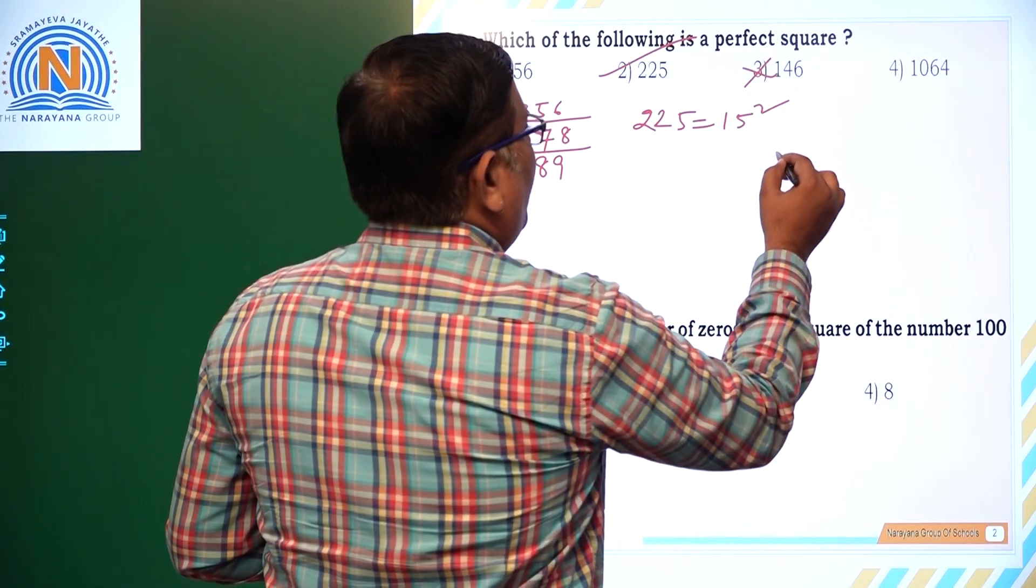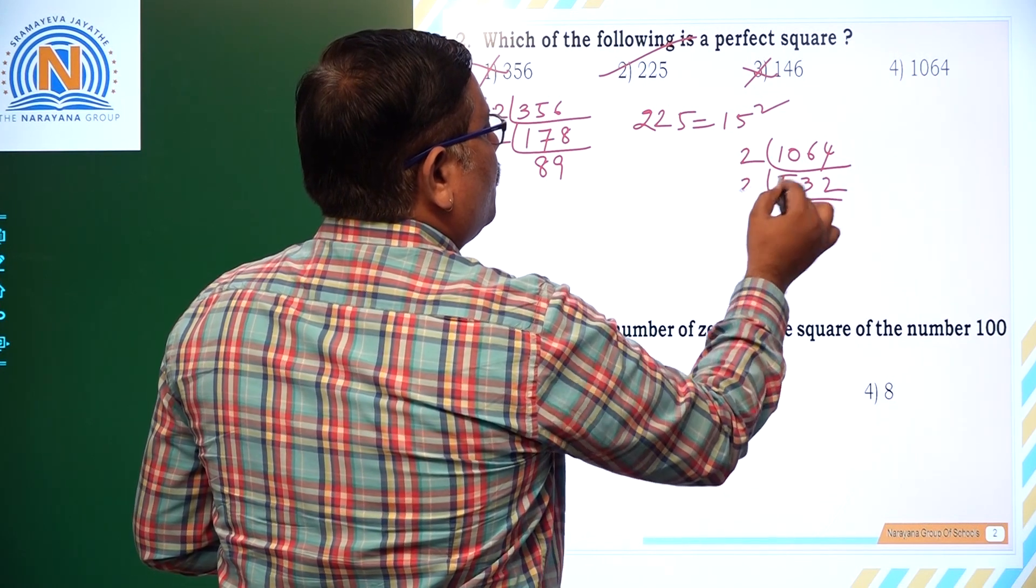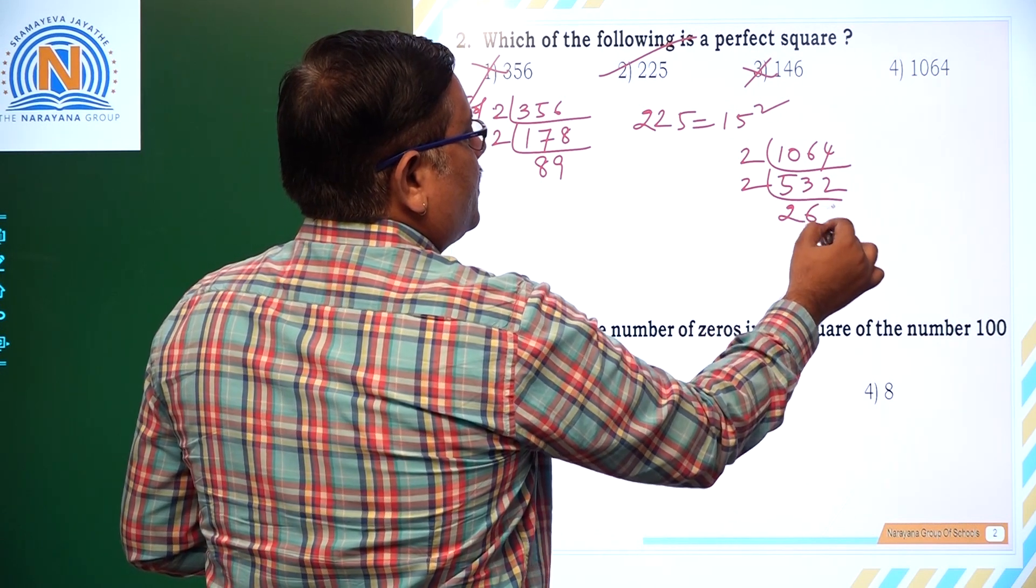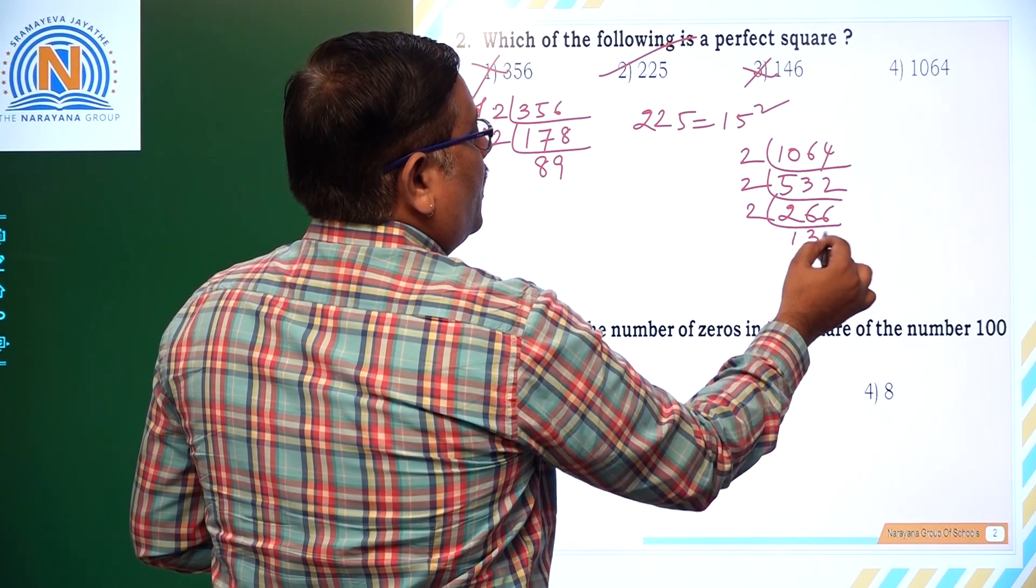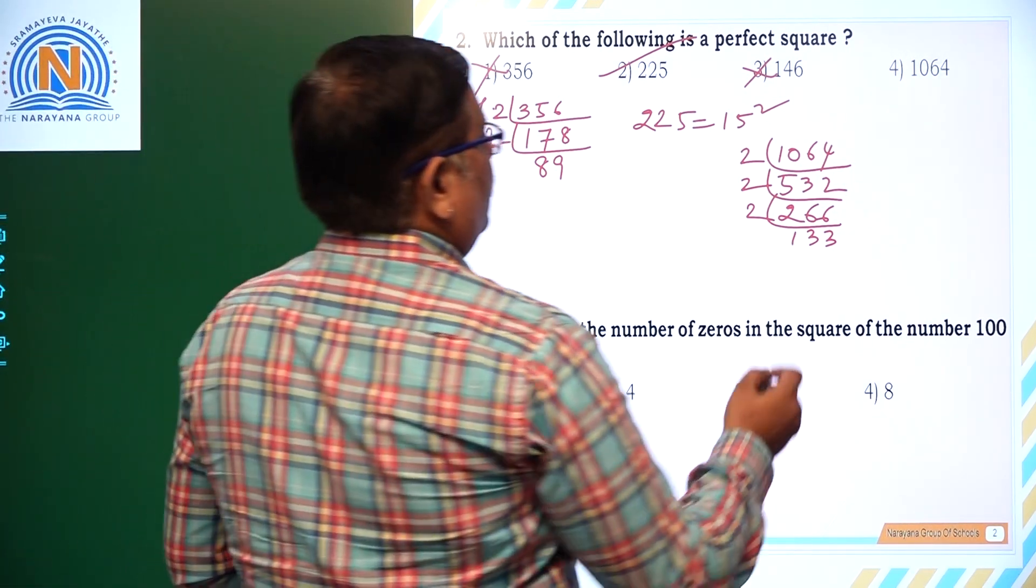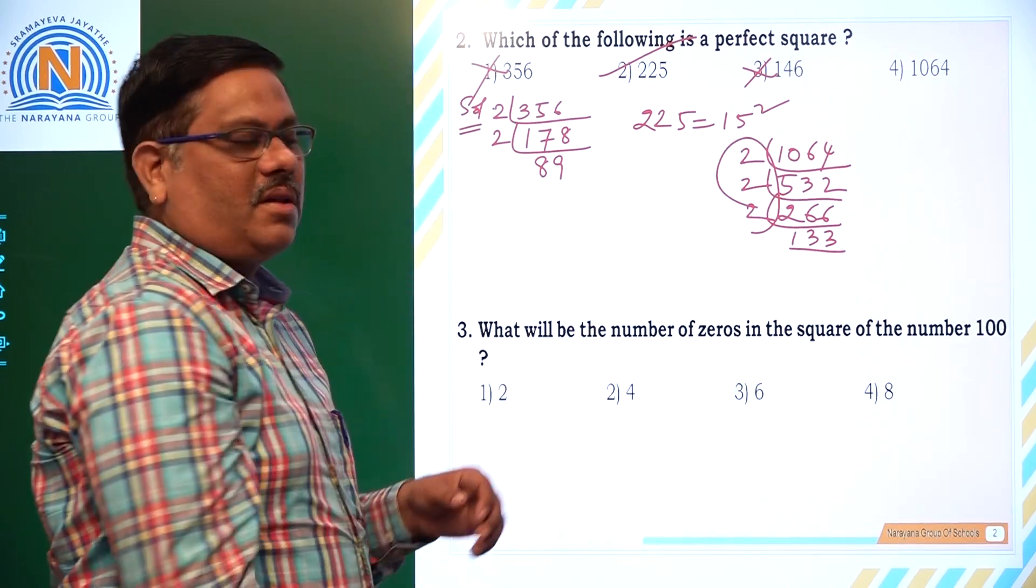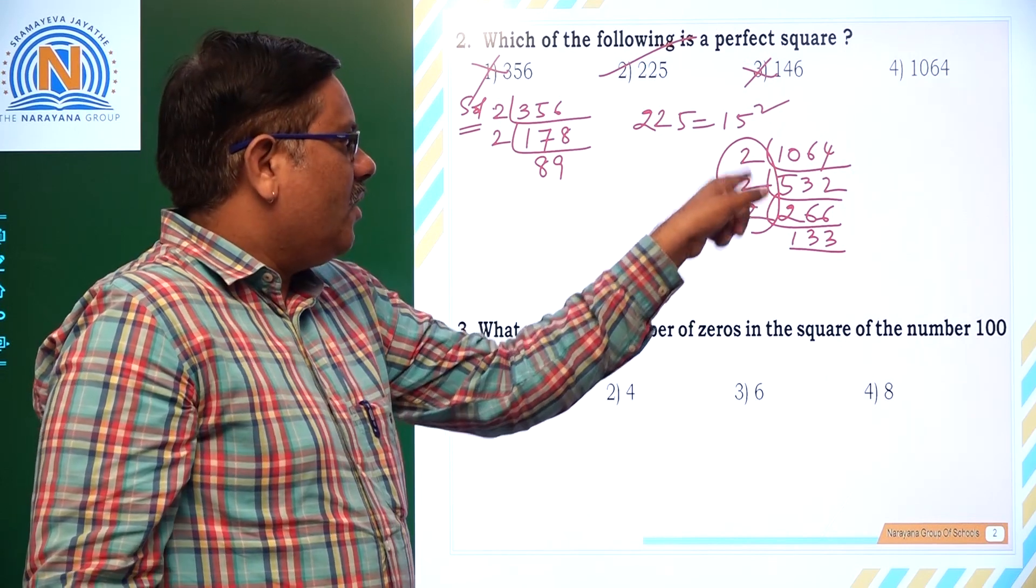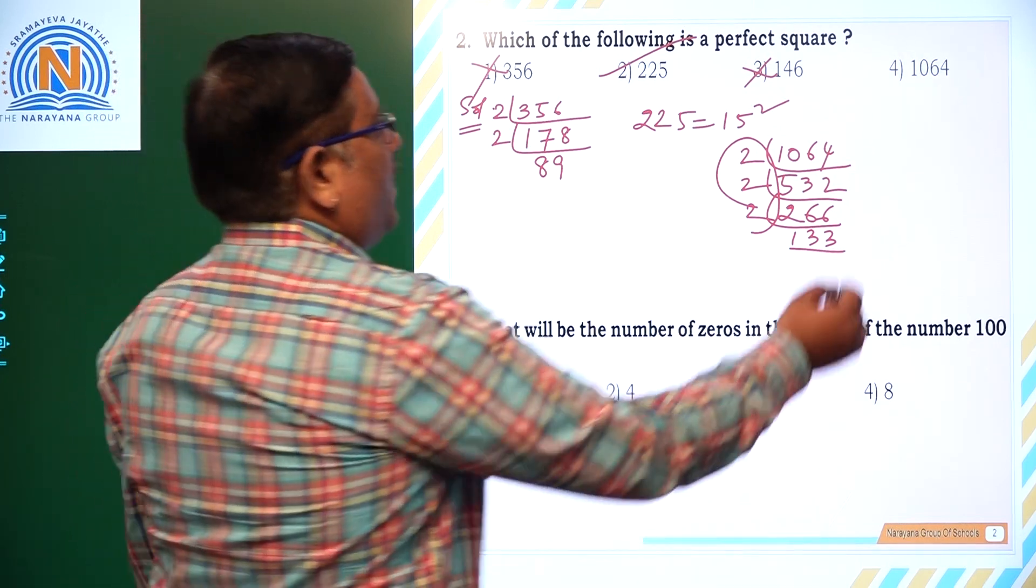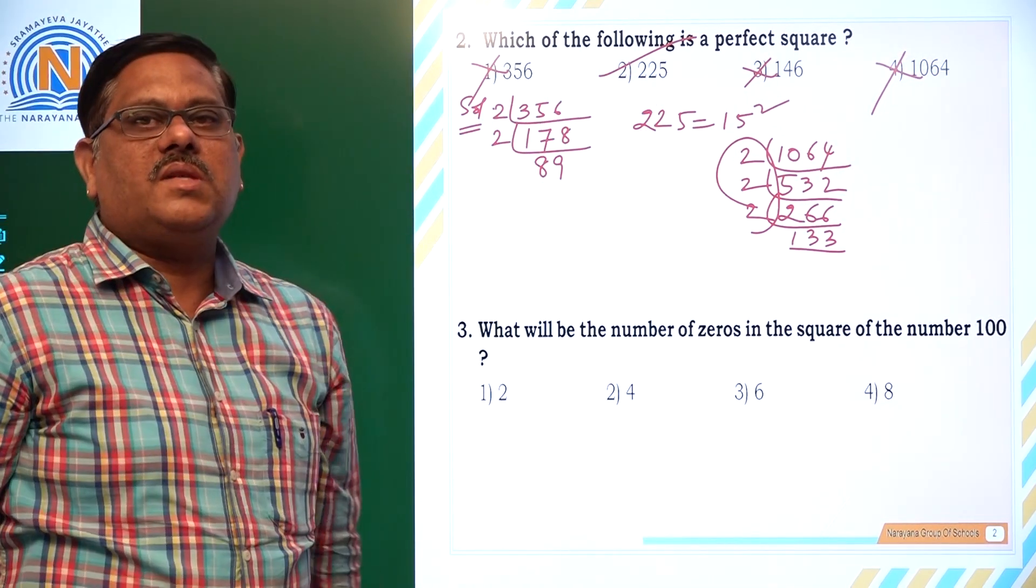1064, if you have to find out the prime factorization. Here itself if you look at, it is not 12 squared. Here you have 2 to an odd power, so definitely it is not a perfect square. So it is also not a perfect square. So out of the given four options, second option is the right answer.